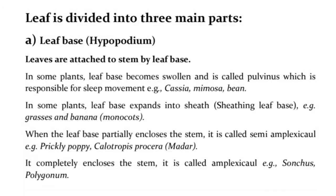A leaf is divided into three main parts: leaf base (hypopodium), petiole, and lamina. Leaves are attached to the stem by the leaf base. In some plants, the leaf base becomes swollen and is called pulvinus, which is responsible for sleep movement, e.g., Cassia, Mimosa, and bean. In some plants, the leaf base expands into a sheath — called a sheathing leaf base — e.g., grasses and banana (monocots).